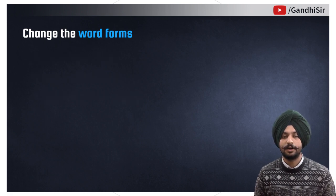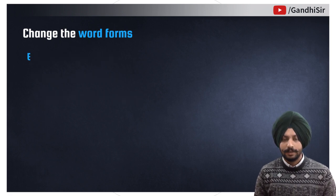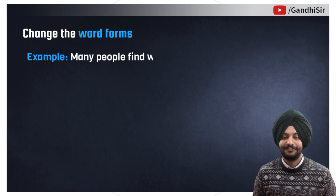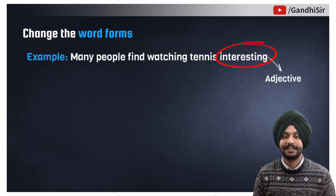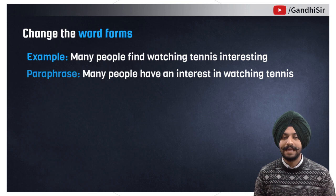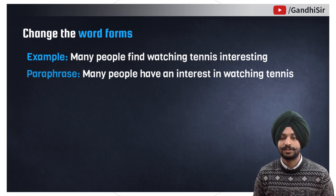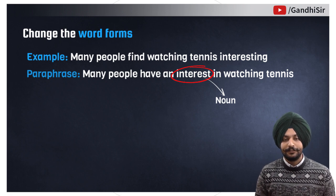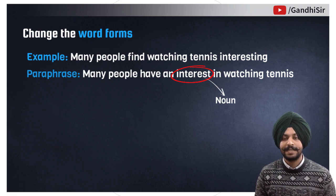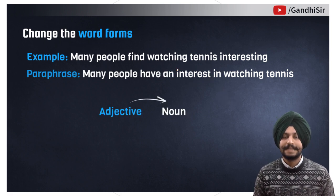Here is the original sentence: 'Many people find watching tennis interesting.' 'Interesting' is an adjective here. So how can we paraphrase it? We can say: 'Many people have an interest in watching tennis.' Here 'interest' is a noun. So what we have done is changed the adjective to a noun.